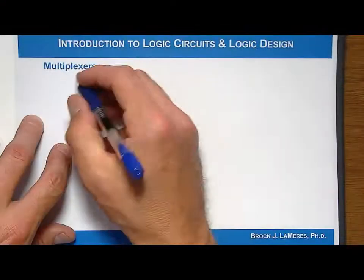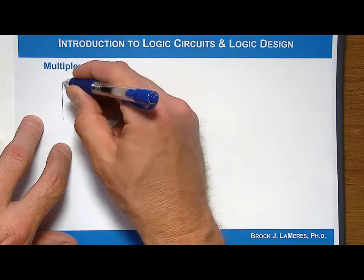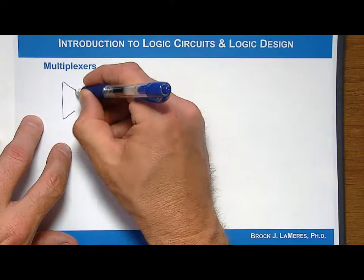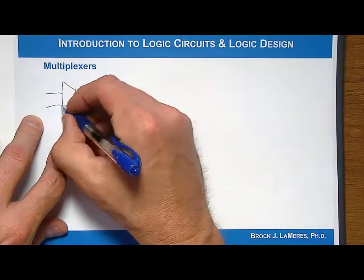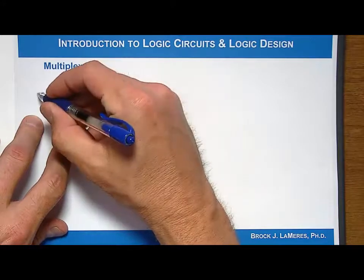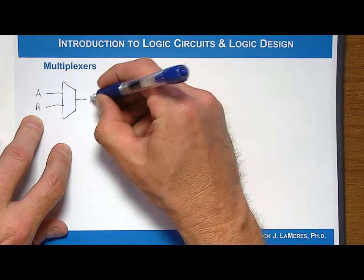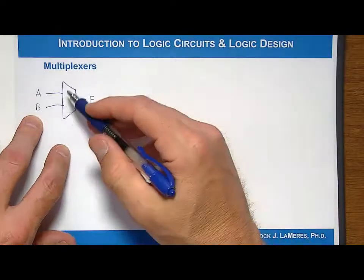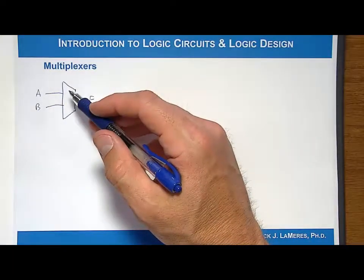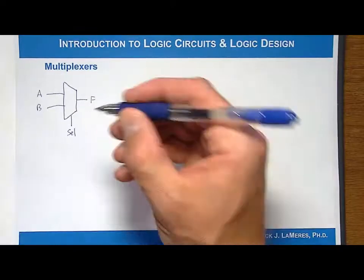The multiplexer has a unique symbol. It looks like it has a longer side on the left and a smaller side on the right, with outputs on the right. Let's look at a 2-to-1 multiplexer as an example. I have inputs A and B, and I have an output F. The way this works is I'm either going to connect A to output F or B to output F, depending on another input called a select line.